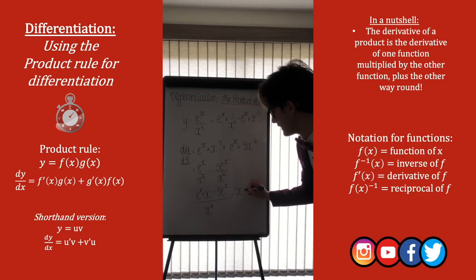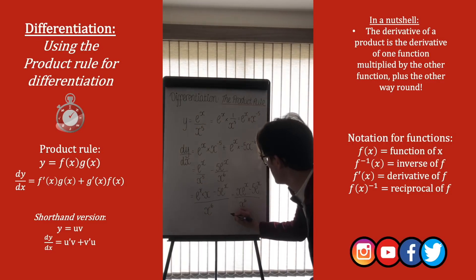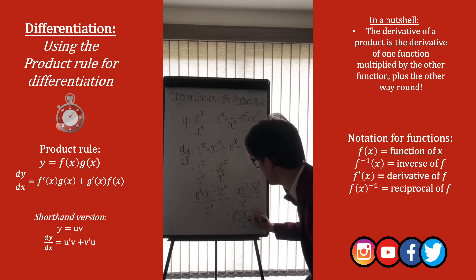And so we get x e to the x minus 5 e to the x over x to the 6. And also with this, again, we can factor out e to the x, so what we get is this is equal to e to the x, x minus 5 over x to the power of 6.